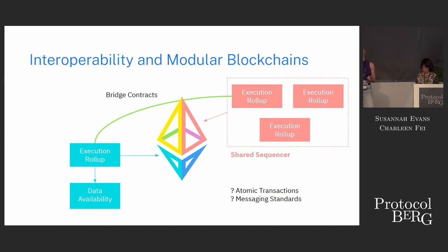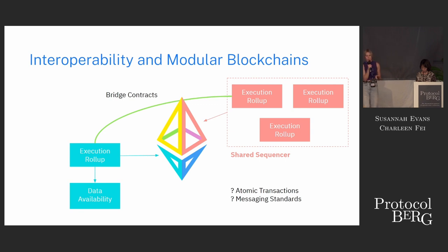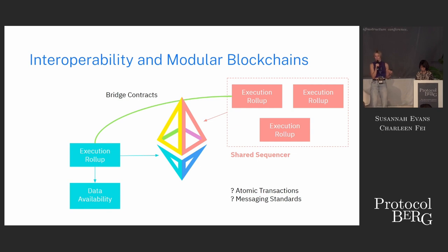This raises a lot of questions because we don't just have one type of rollup. We have optimistic rollups, ZK rollups, there are loads of different rollup frameworks emerging so you can actually deploy your own rollup. It's not inconceivable that we're going to have loads and loads of these rollups all plugging into Ethereum and such.